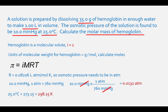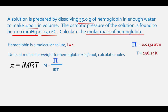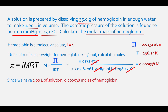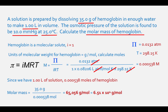Rearranging to solve for molarity: molarity equals osmotic pressure divided by the Van't Hoff factor times the gas constant times temperature. Plugging in values: 0.0132 atmospheres divided by (0.08206 liters·atm/mol·K times 298.15 Kelvin) equals 0.000538 molar. Since we have 1.00 liter of solution, we have 0.000538 moles of hemoglobin. Therefore the molar mass is 35.0 grams divided by 0.000538 moles, which equals 65,056 grams per mole, or 6.51 times 10 to the fourth grams per mole.